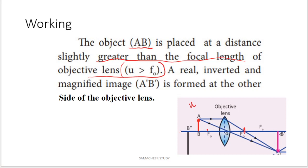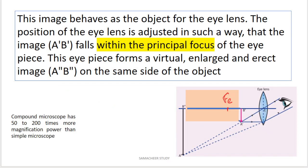In the second step, the image A', B' acts as the object for the eye lens. This image is the object for the eye lens. In the eye lens, we see the first image A', B' as the object. This is the eye lens — the optical center produces an image on the same side of the object.